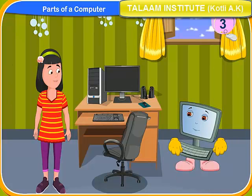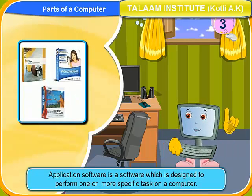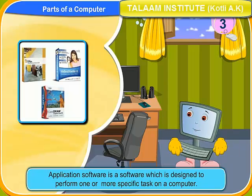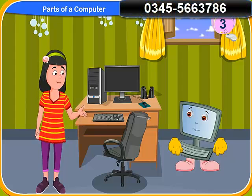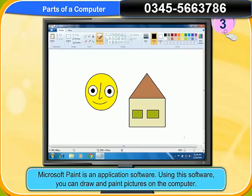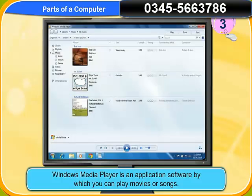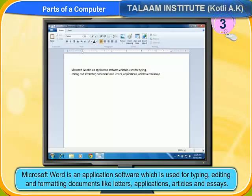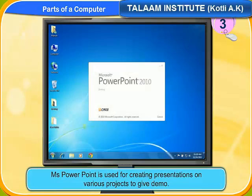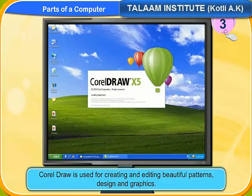What are application software? Application software is a software which is designed to perform one or more specific tasks on a computer. Can you give me any example of application software? Yes, Microsoft Paint is an application software. Using this software, you can draw and paint pictures on the computer. Windows Media Player is another application software by which you can play movies or songs. Microsoft Word is another application software which is used for typing, editing and formatting documents like letters, applications, articles and essays. MS PowerPoint is used for creating presentations on various projects to give demo. CorelDraw is used for creating and editing beautiful patterns, design and graphics.